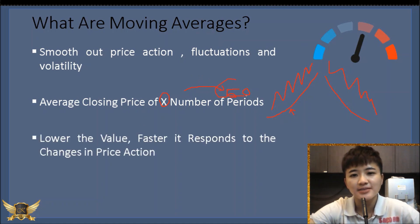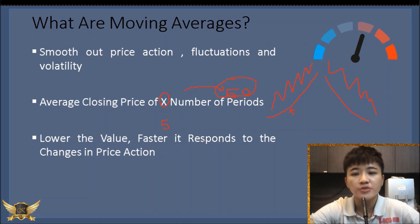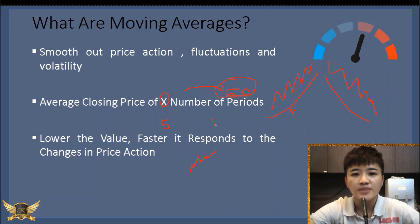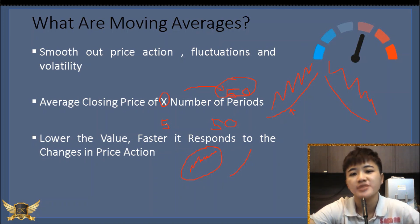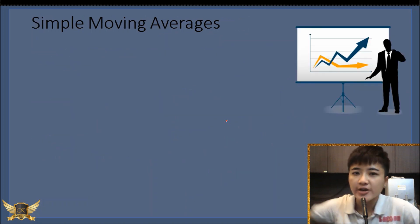The lower the number, the faster it will respond to changes in price action. A 5-period moving average would be more volatile — you see a lot more volatility — as compared to a 50-period moving average, which will be smoother. There are pros and cons when it comes to using a small number versus a large number, and there are two very common types of moving average.